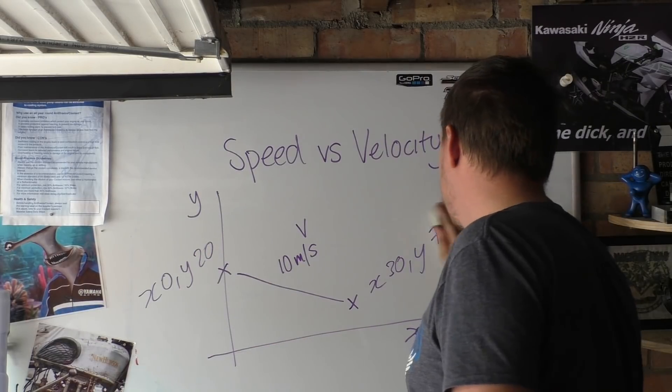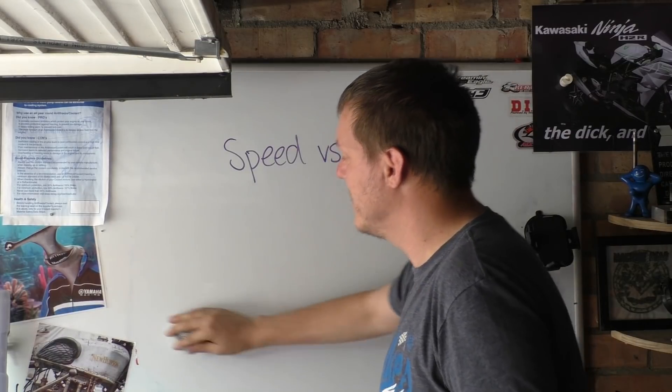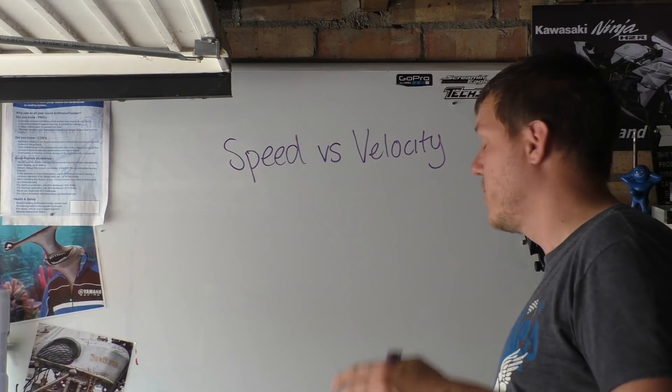Why does this even matter? Why do we have the two? Why do we have this scalar quantity and this vector quantity?